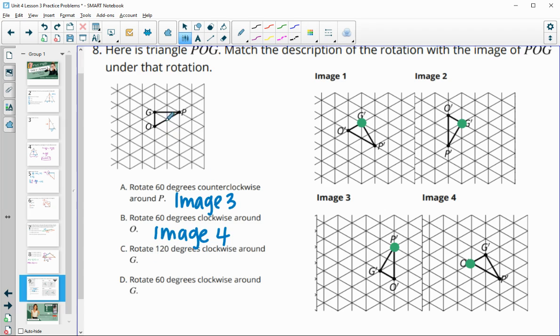So now we just need to look at these two and decide which one is a clockwise rotation, 120 degrees. So let's take a look here. If we did a 120-degree clockwise rotation, so remember clockwise is this way.